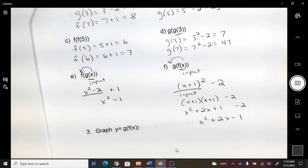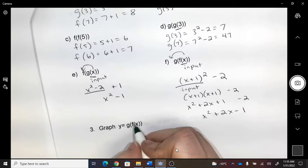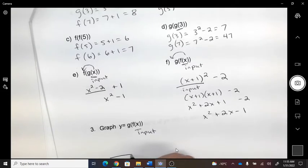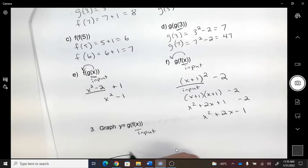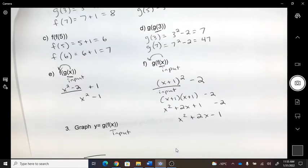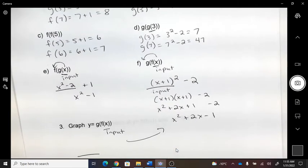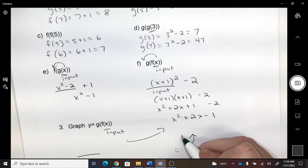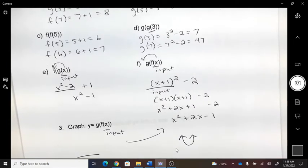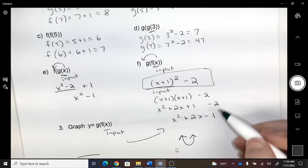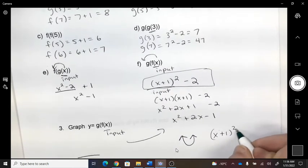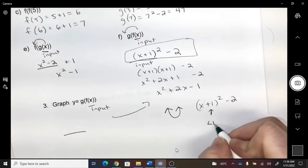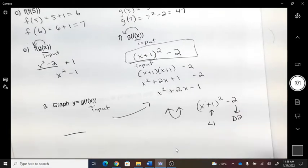And then I can't forget to subtract two. Okay, last question. Graph g of f of x. So that's my input. Oh, I just did this one. That's this one. So what do I know about that? It's a quadratic. It has moved left one. Down two.